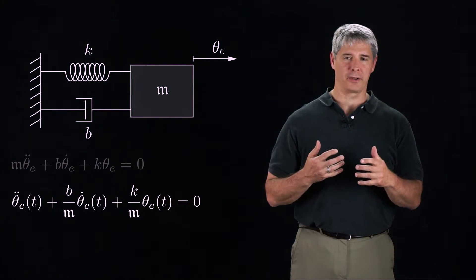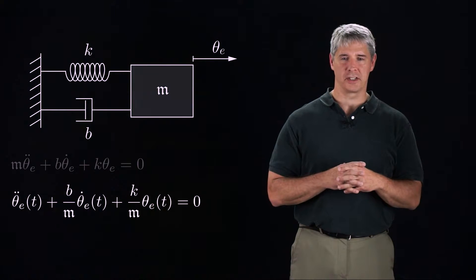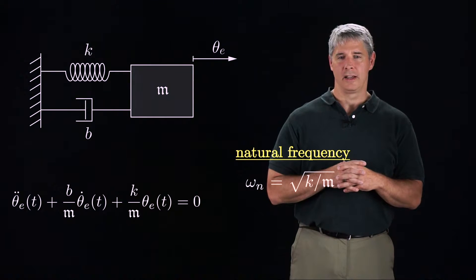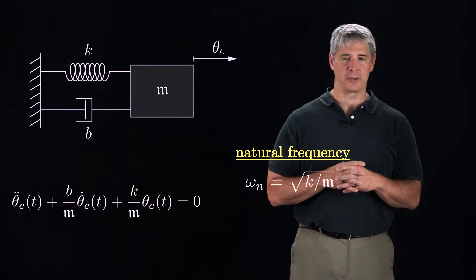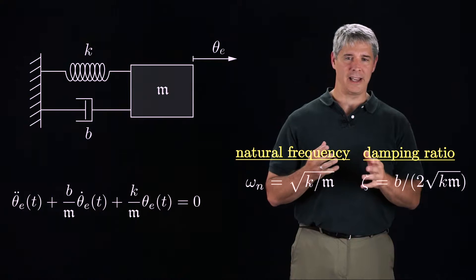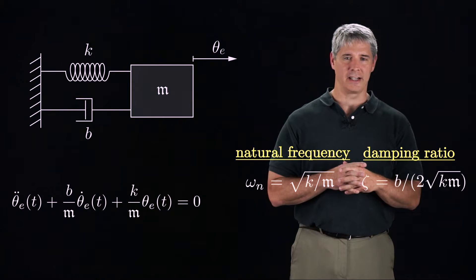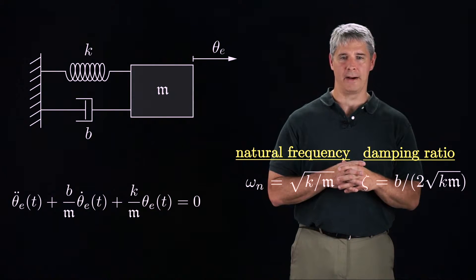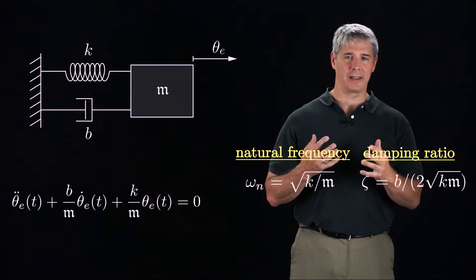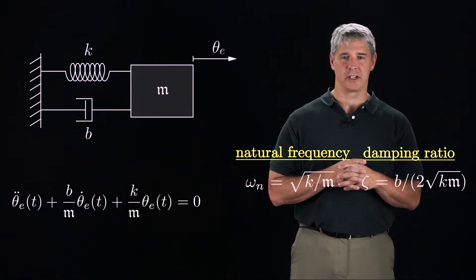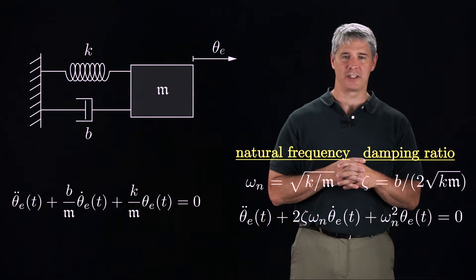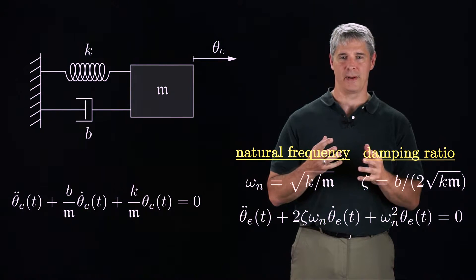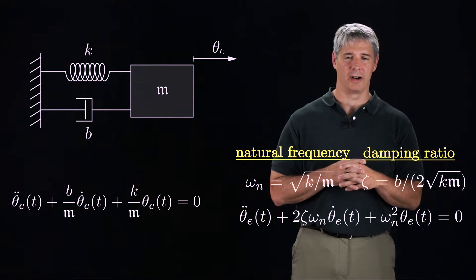For stable second-order differential equations, it's customary to define the natural frequency omega n to be equal to the square root of k over m, and the damping ratio zeta to be b over 2 times the square root of km. Then we can rewrite the differential equation as theta e double dot plus 2 zeta omega n theta e dot plus omega n squared theta e equals 0.